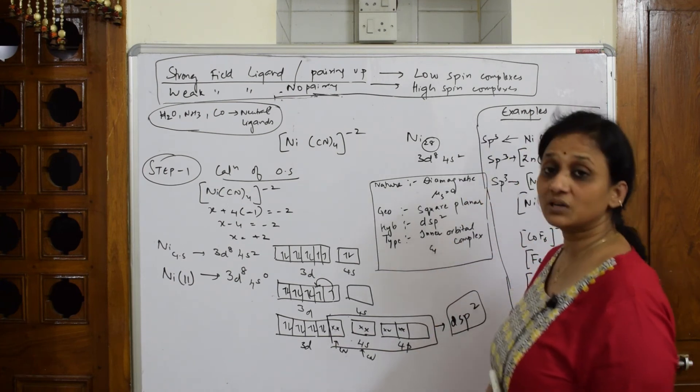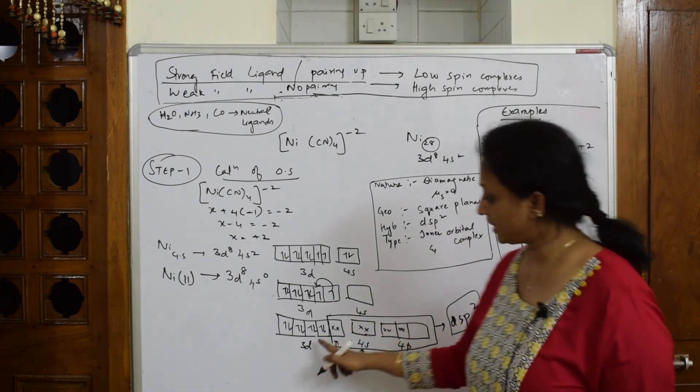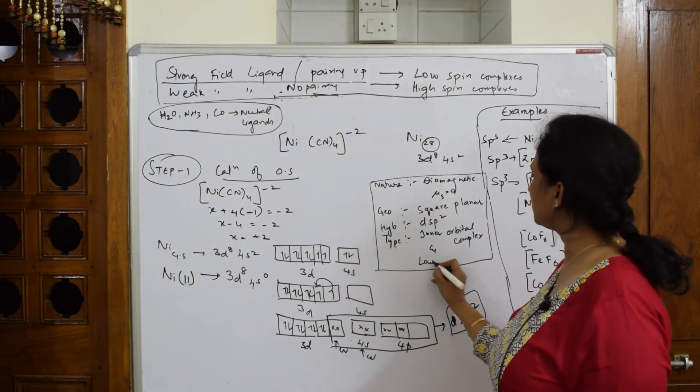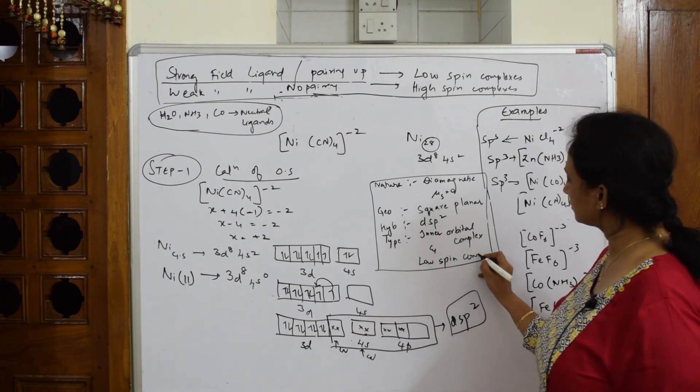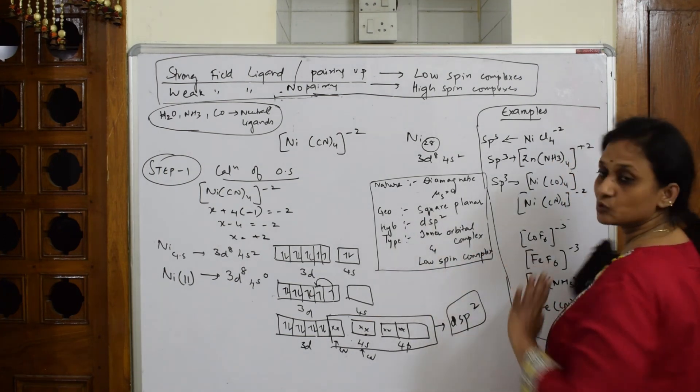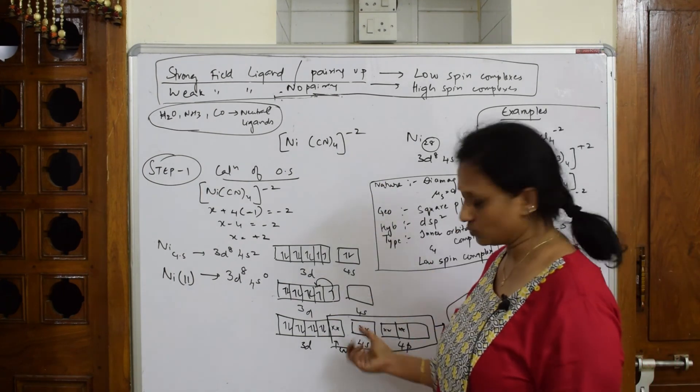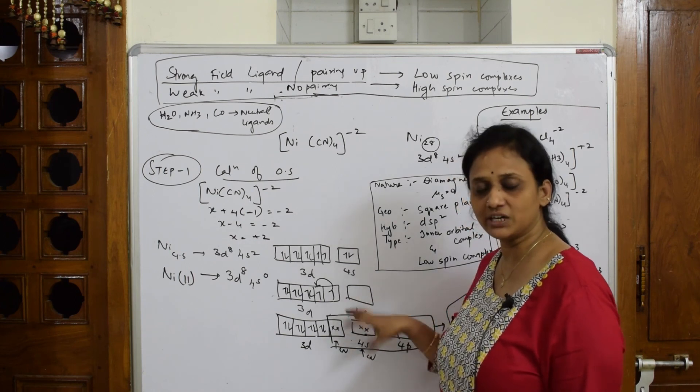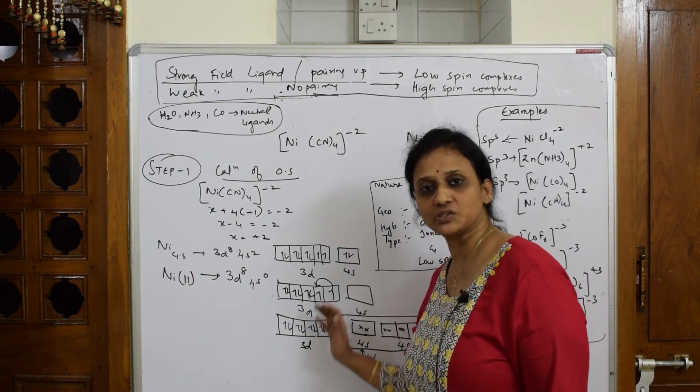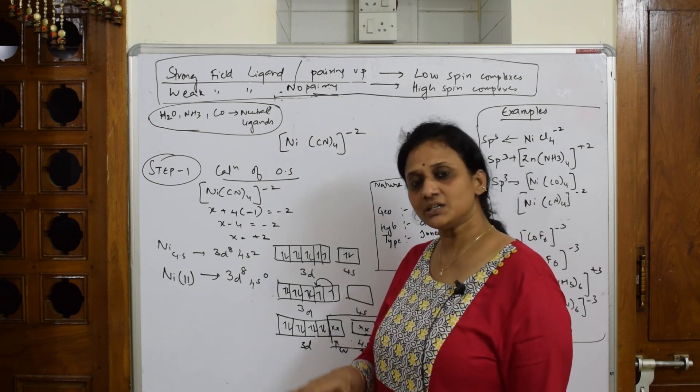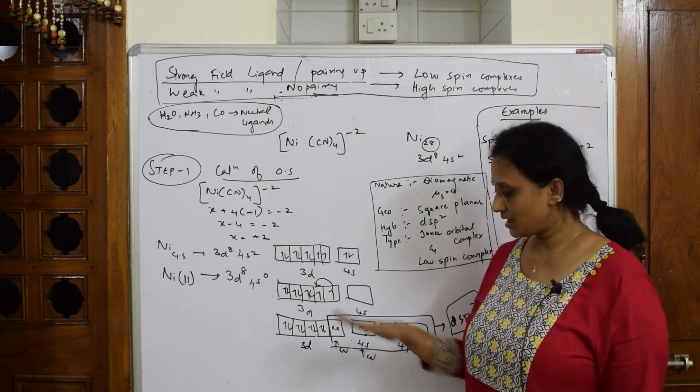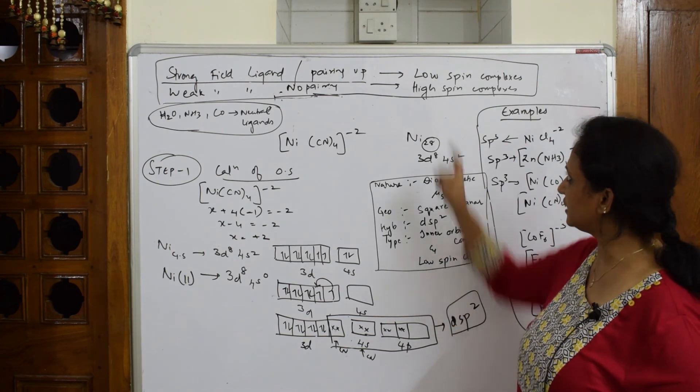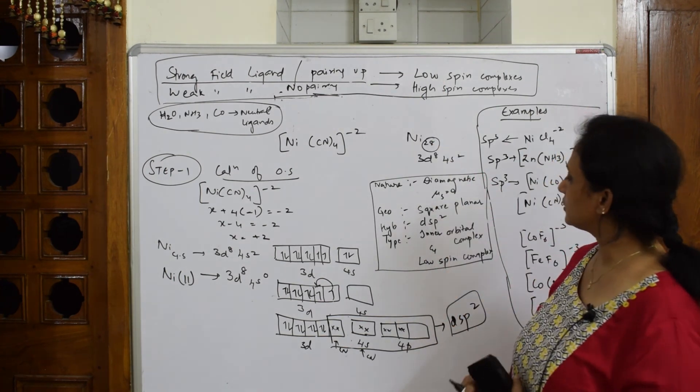Next, inner orbital, what else is this? I said if it is pairing up, if it is a strong field, it is compulsory a low spin complex. Low spin complex, inner orbital as well as low spin complex. What does it do? Basically, your CN, whenever a strong field ligand is there, before it starts filling or donating electrons, it'll try to lower the energy. When it's pairing up, it'll try to lower the energy. That's why we call it as low spin complexes. Once it lowers, then it starts forming hybrid orbitals. So always remember, strong field means low spin complexes.